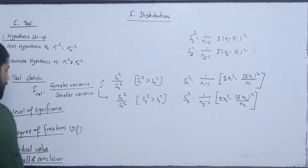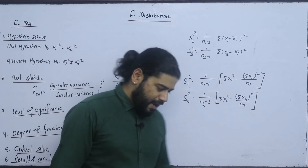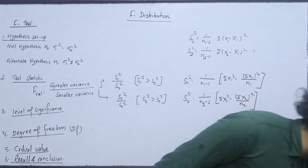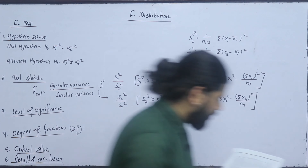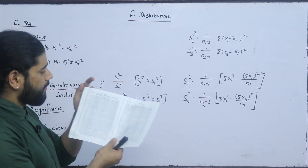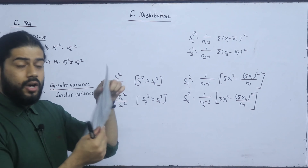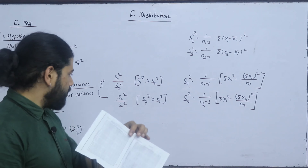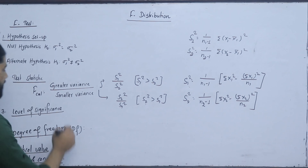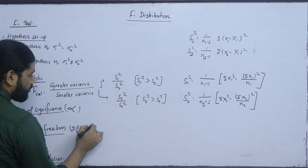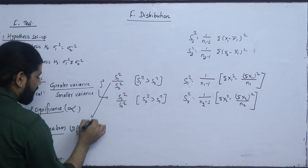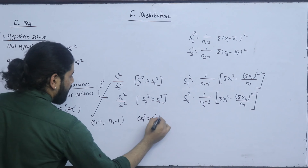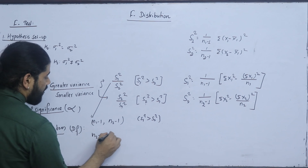In this condition, the degree of significance is 1 percent or 5 percent. There are F-tables for 1 percent and 5 percent. The level of significance is alpha. The degree of freedom is equal to n1-1 and n2-1. If S1 is greater, the numerator degree of freedom is n1-1 and denominator is n2-1. If S2 is greater, then the numerator is n2-1 and denominator is n1-1.